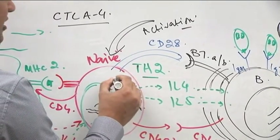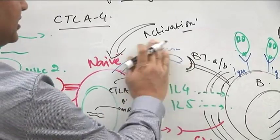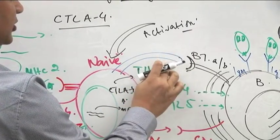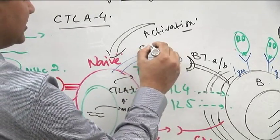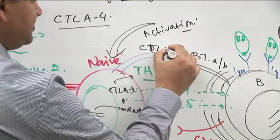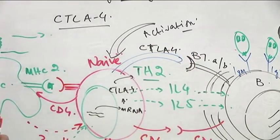Once this is cycled to the surface, it replaces the CD28 and comes in its place and interacts with the B7.